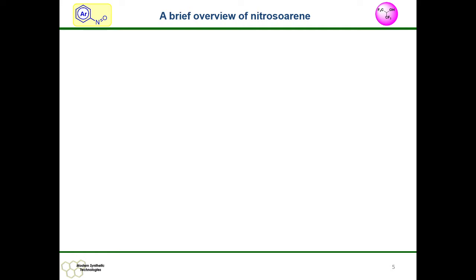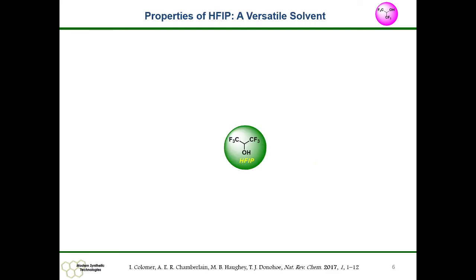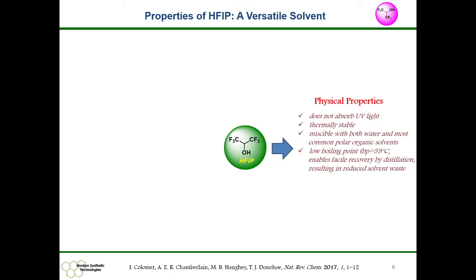Here, two properties of nitrosyrene are discussed. The first one is the polar nature of nitrosyrene — oxygen is the most electronegative atom. The other is the redox property, that is the nitroso radical anion property of nitrosyrene. In our chemistry, HFIP has an imperative role and has been considered as a versatile solvent due to its unique properties.